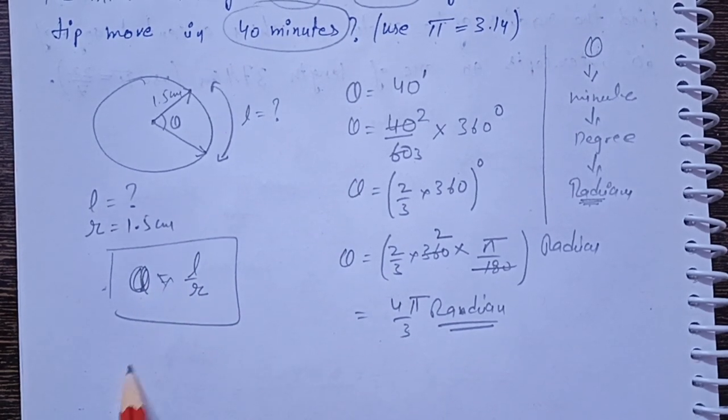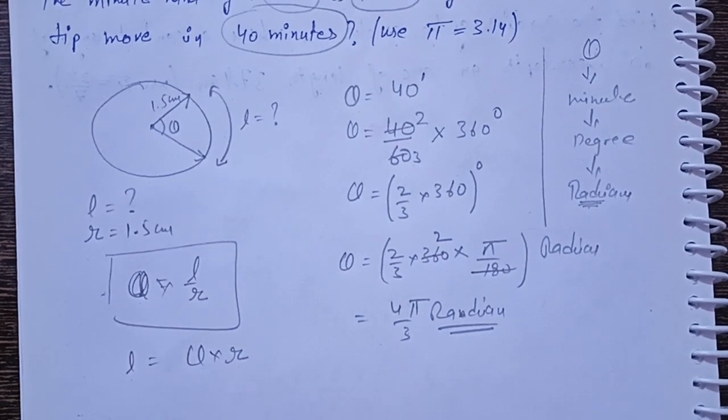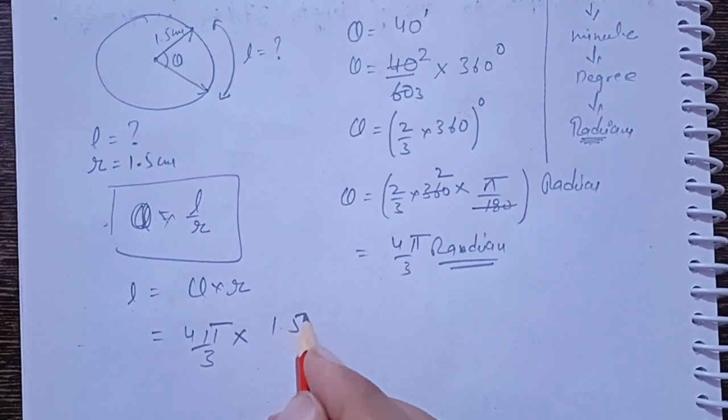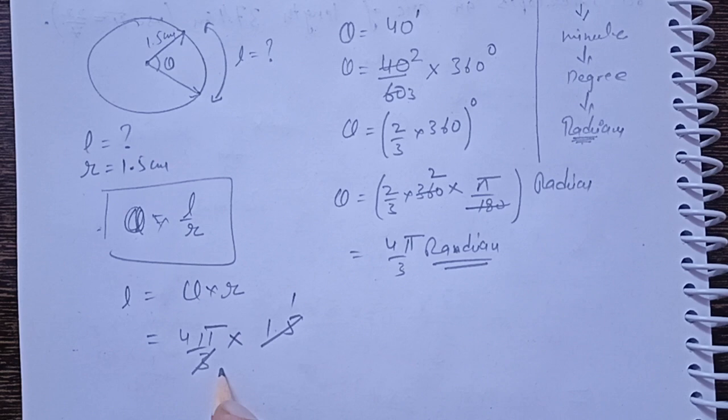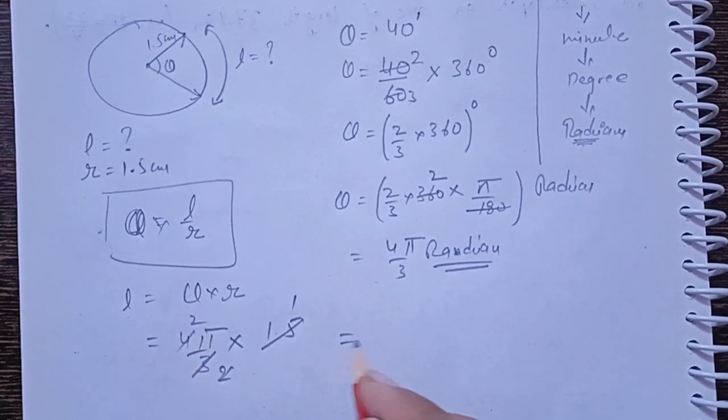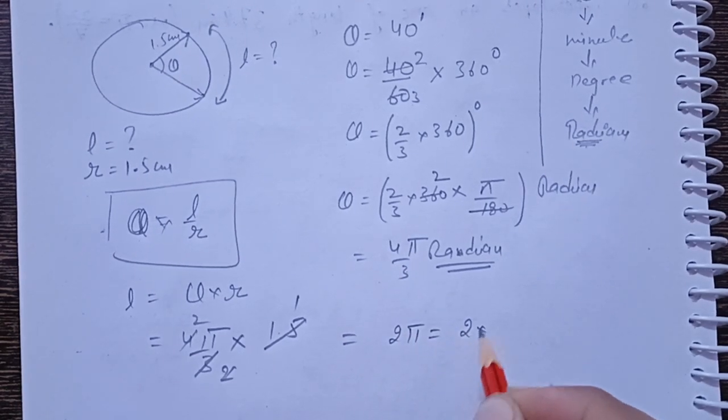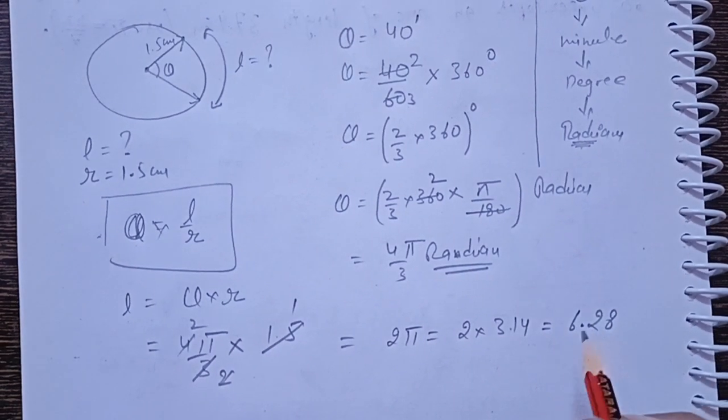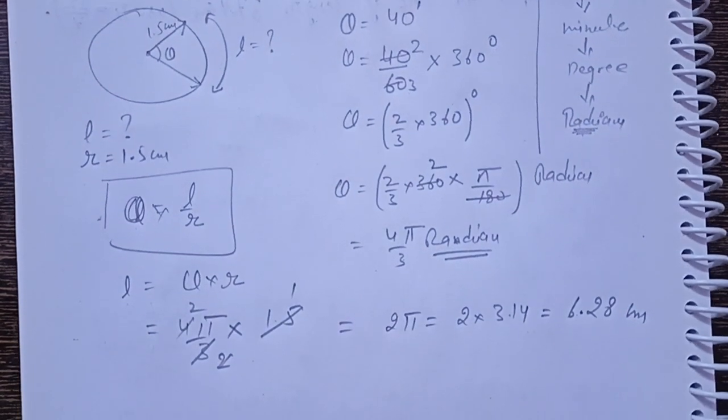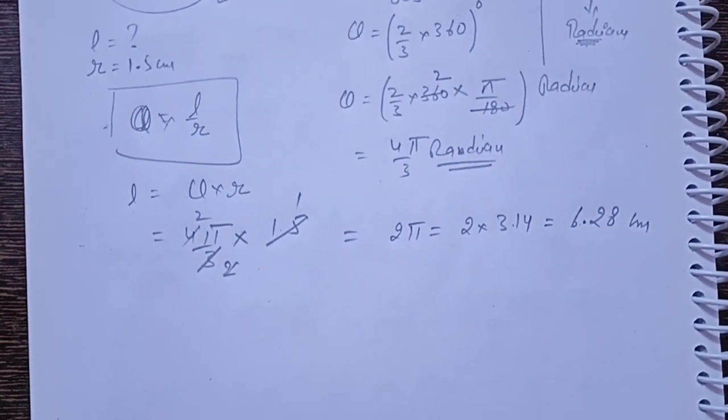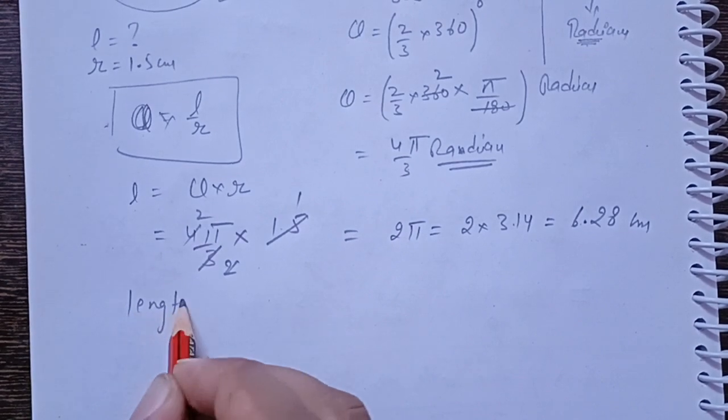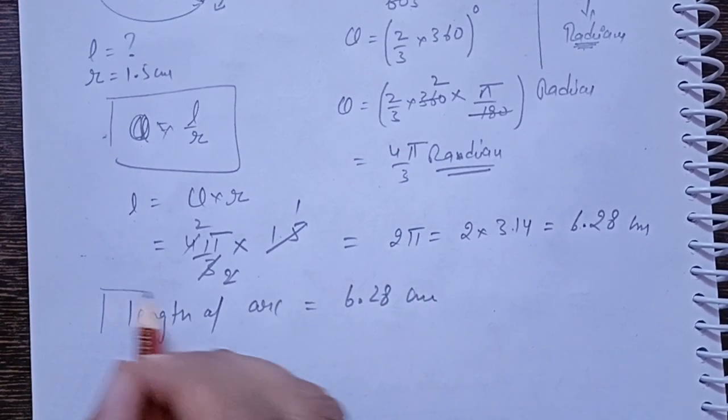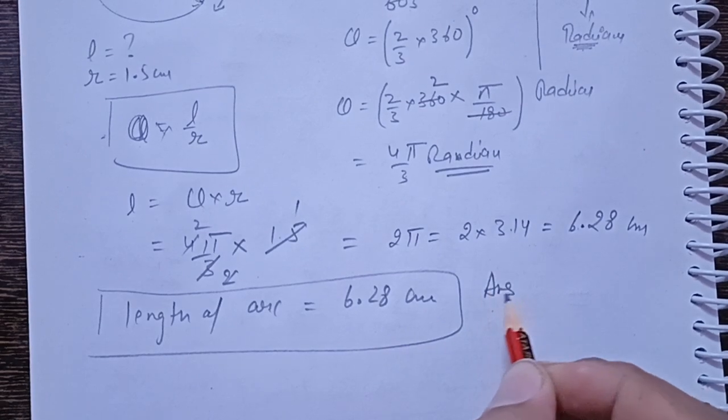We have to find out the L. Cross multiply: L value is theta into R. Theta value is 4 pi by 3, R value is 1.5 centimeters. So our L value is 2 pi. Pi value is 3.14, so 6.28 centimeters. The length of arc is 6.28 centimeters. Answer.